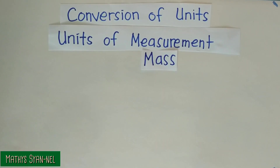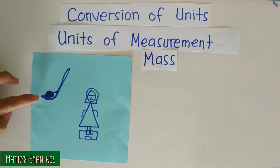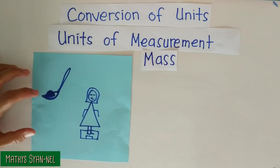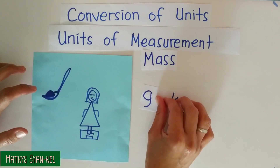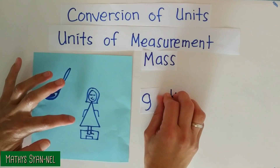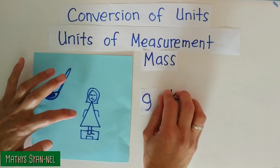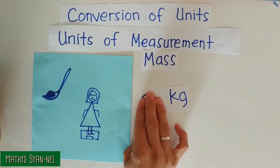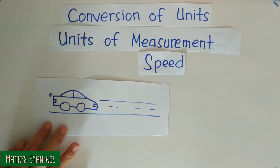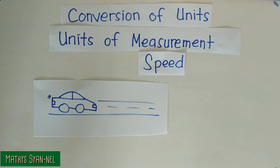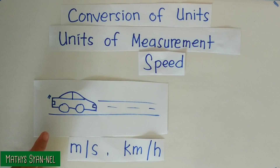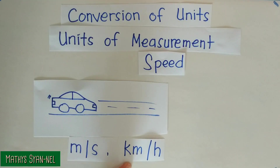Now, let's talk about mass. In the illustration, we see a spoonful of powder — it could be sugar, salt, or any powder. The unit we can use for its mass is gram, or g. And we have a girl on a balance; the unit to measure the mass of a person is kilogram, or kg. Next, we have speed — we can also measure speed, and speed could be in a unit meter per second or kilometer per hour. I am going to show how to convert the speed of an object in meter per second to kilometer per hour.